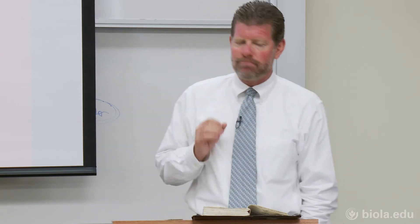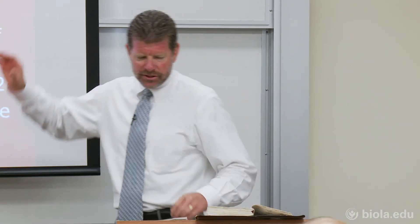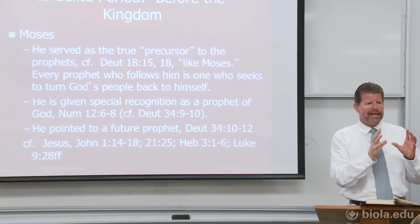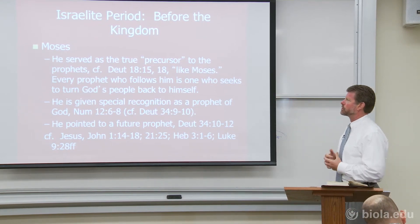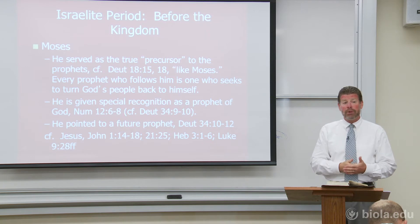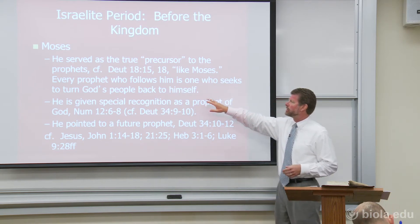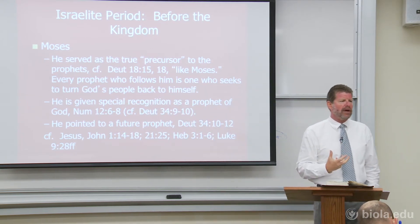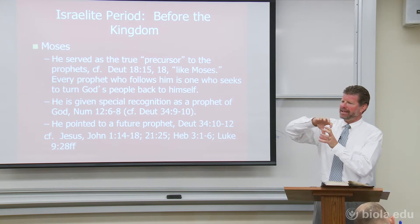So we have Miriam right from the very beginning established as a prophet. Now look at point number three — Moses. He served as the true precursor to the prophets. Even though in Exodus 7 Moses is 'God' and Aaron is the prophet, it's truly Moses who serves as the precursor. In Deuteronomy 18:15-18, talking about a prophet who's going to come, it's going to be 'like me,' is what Moses says. Every prophet who follows him is one who seeks to turn God's people back to himself. This is the role of a prophet, and Moses is that precursor.